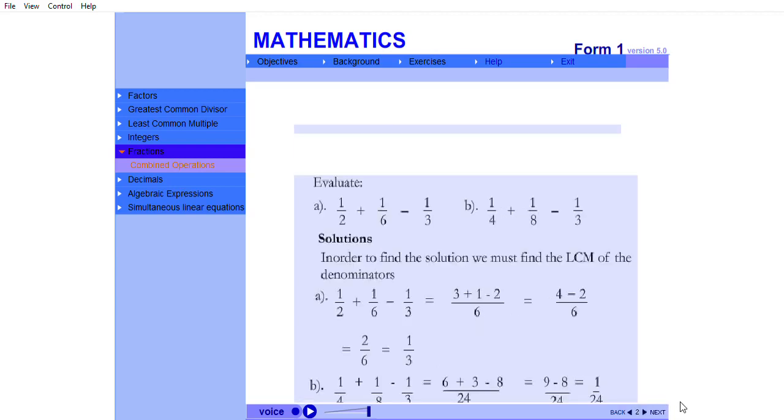Introduction. Evaluate: a) 1 over 2 plus 1 over 6 minus 1 over 3. b) Evaluate: 1 over 4 plus 1 over 8 minus 1 over 3.